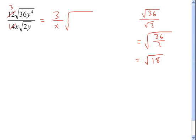If I write it as one big radical, you get the 36 over 2, right? So 36 y to the 4th over 2y. One sec.